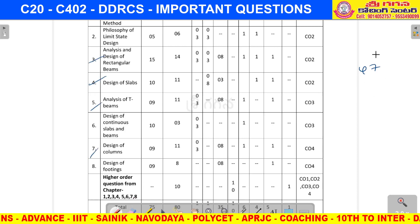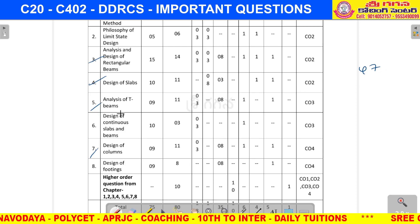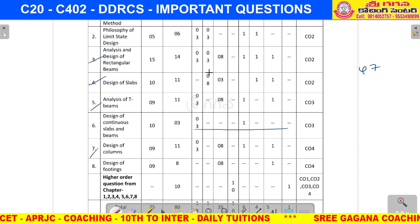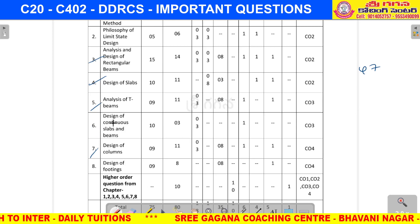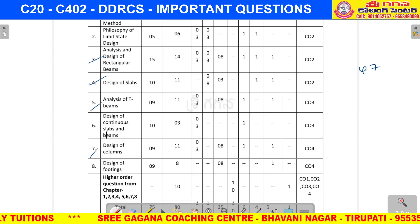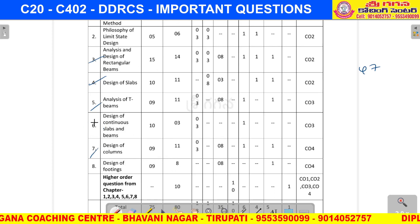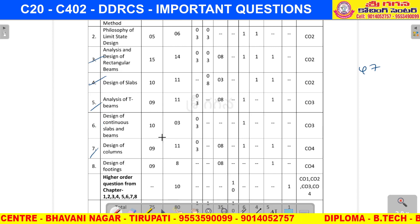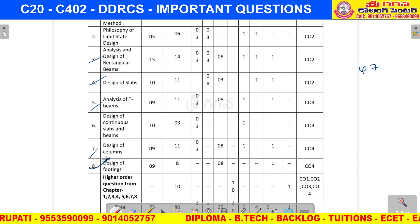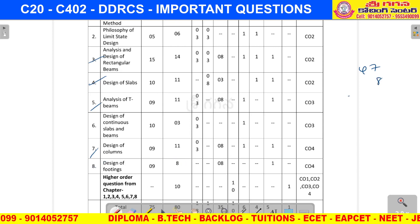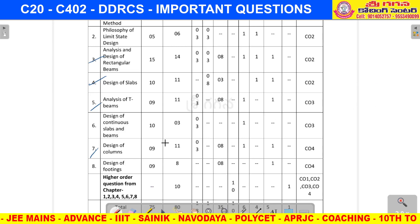With 7 units contributing 10 marks each, we can reach 57 marks. The design of continuous slabs and beams carries 10 marks, but this unit is considered difficult. Skipping it, we can still achieve 57 marks easily. You can potentially score 55 marks overall.